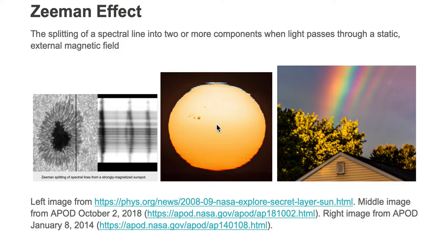If this sunlight hits the Earth's atmosphere on a rainy day, you might see this continuous color of rainbow from red, orange, yellow, green, blue, indigo, and violet.